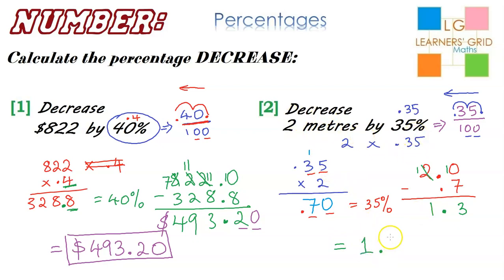if I decrease 2 meters by 35%, I have 1.3 meters. And that's the final answer for that one.